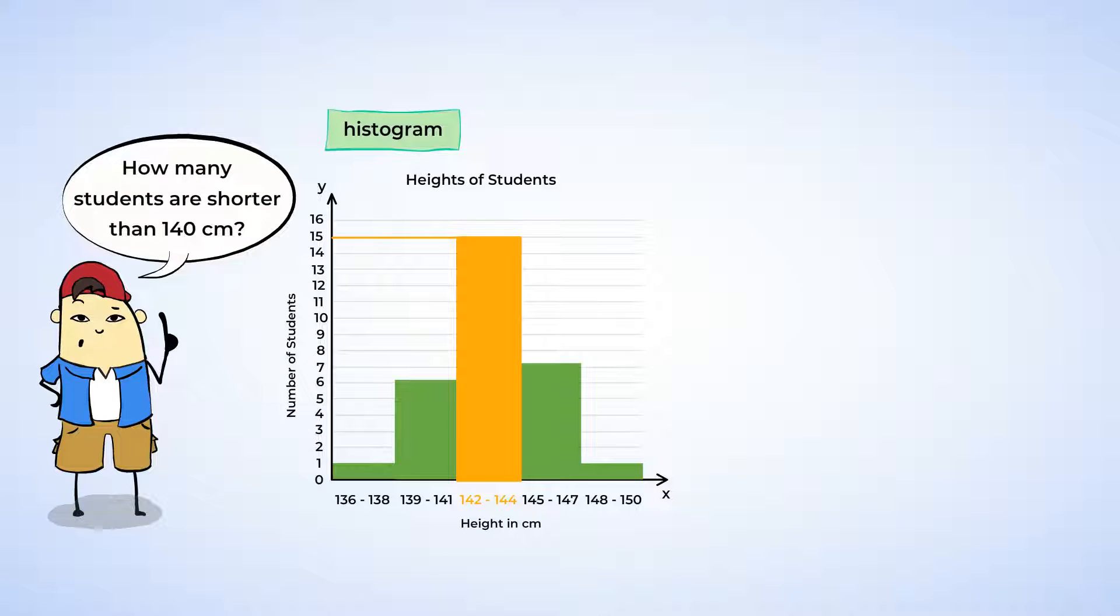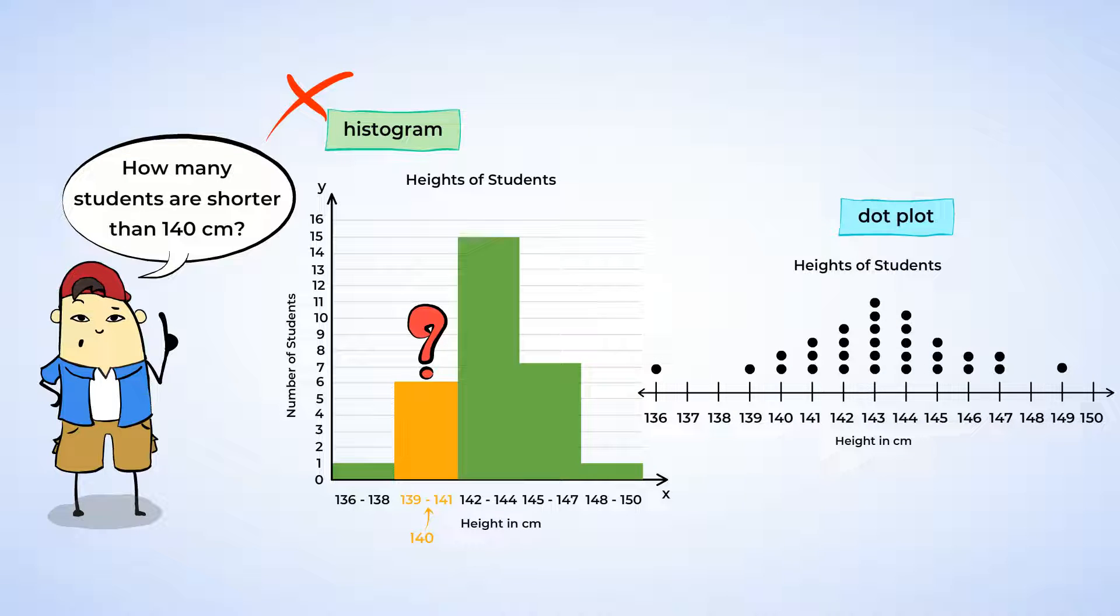And what about how many students are shorter than 140 centimeters? Okay, let's look at the histogram and wait. We have a bucket that goes from 139 to 141, and 140 is in between those numbers. Just by looking at the histogram, we don't know which of the six heights in that bar applies to heights less than 139 centimeters. So this question actually can't be answered using the histogram.